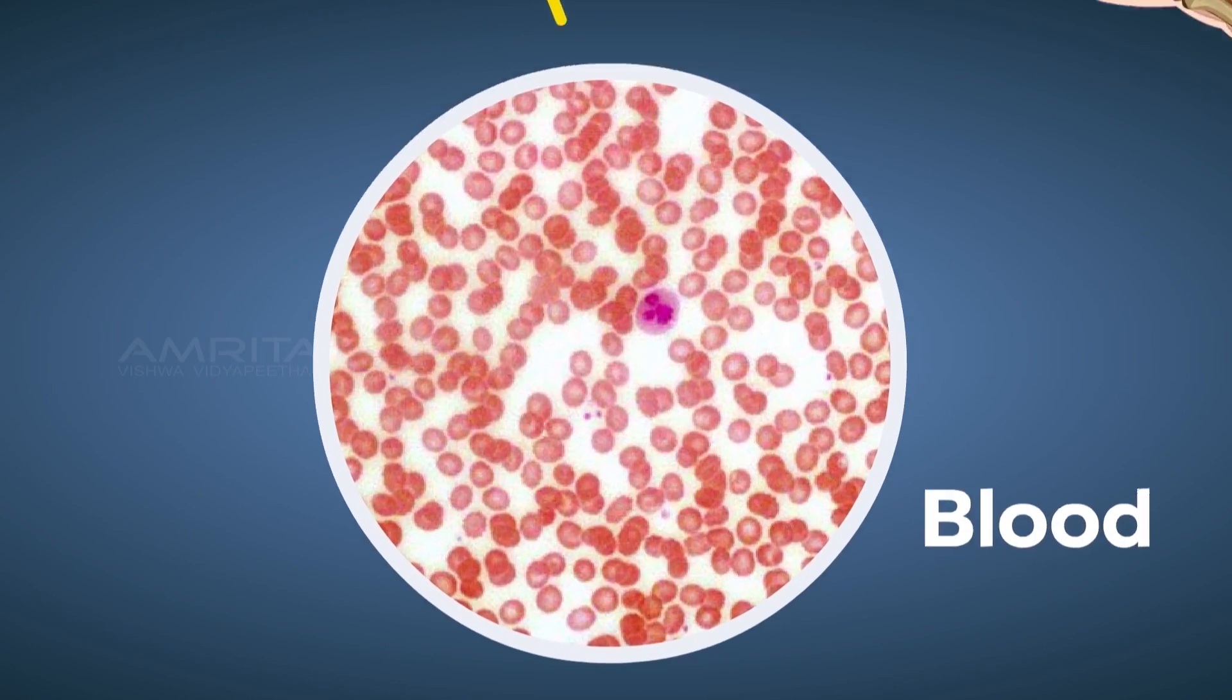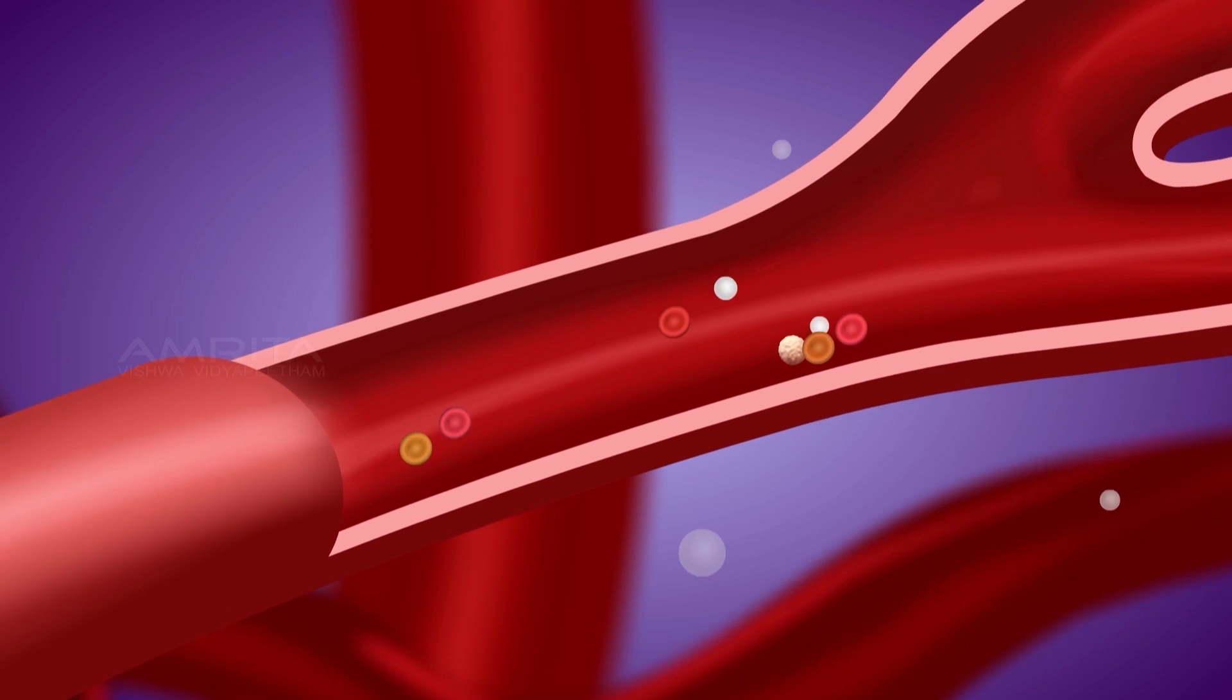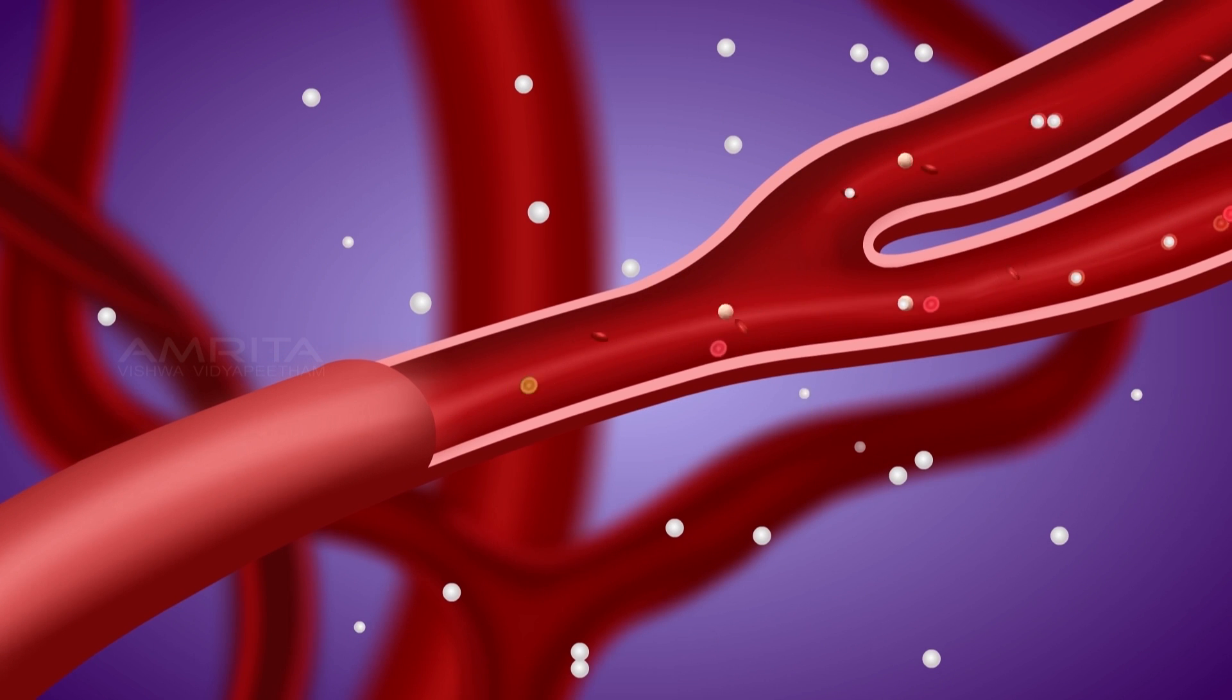The blood contains RBC, WBC and platelets that transport gases and other materials to different parts of the body. Blood has a fluid matrix.